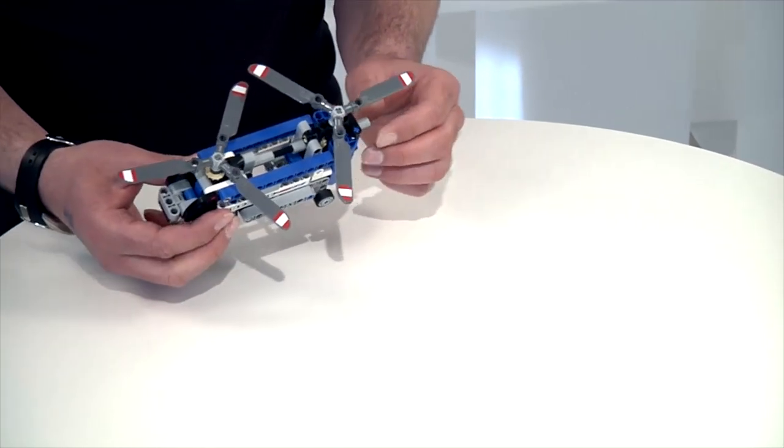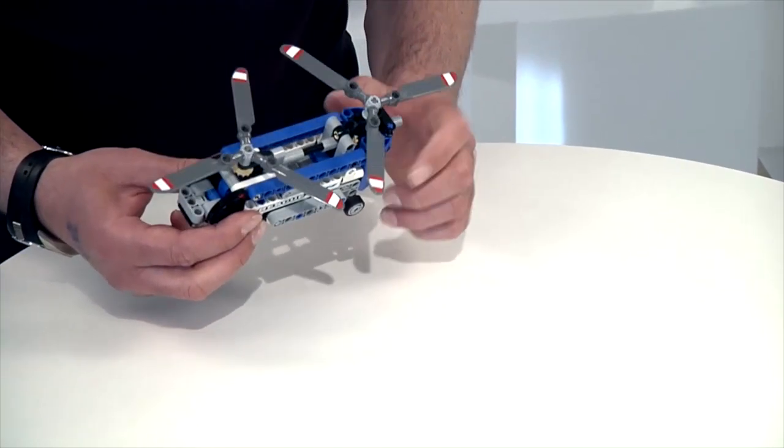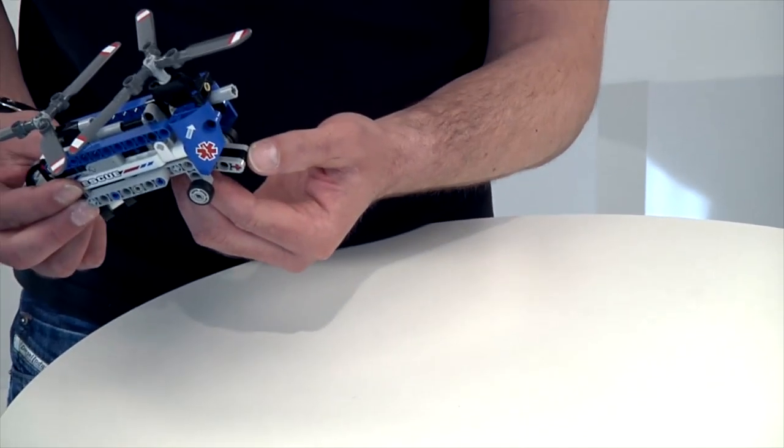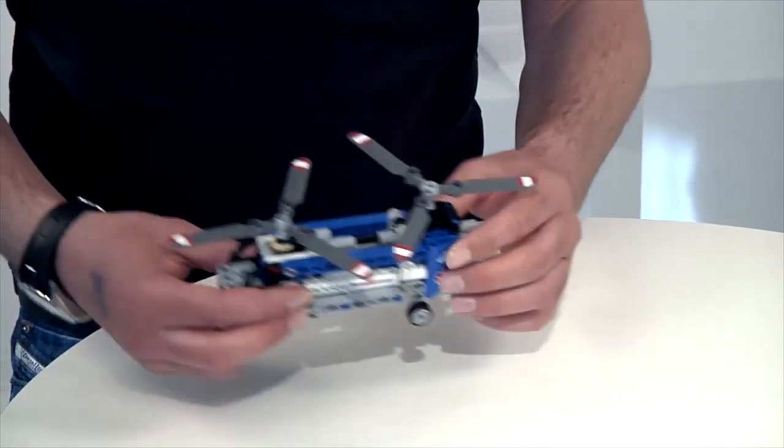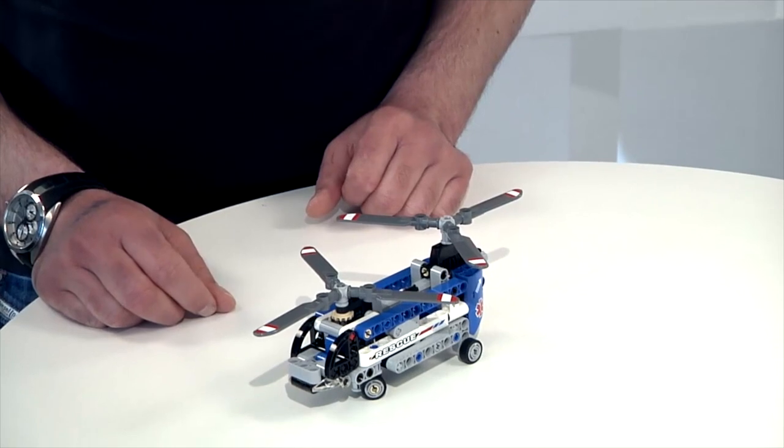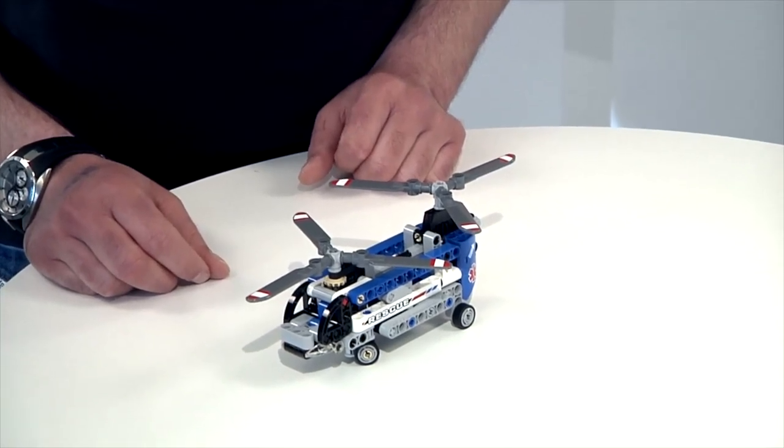But because of our gearing system we can do this instead. And then in the back it also has a small cargo bay that you can open. So the smallest skew in the Technic assortment first half here, the twin rotor helicopter.